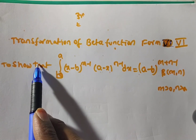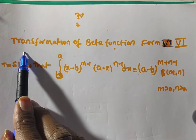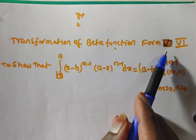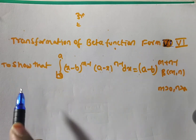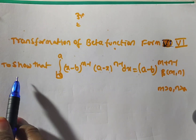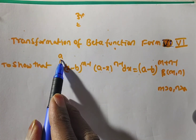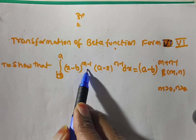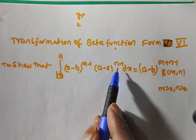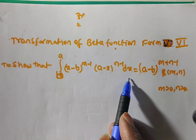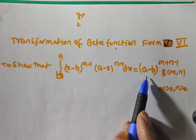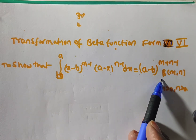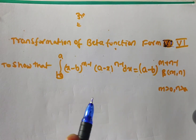Friends, now we are discussing transformation of beta function form 6. That is to show that integral from b to a of (x minus b) to the power m minus 1 into (a minus x) to the power n minus 1 dx is equal to (a minus b) to the power m plus n minus 1 times beta of m comma n.